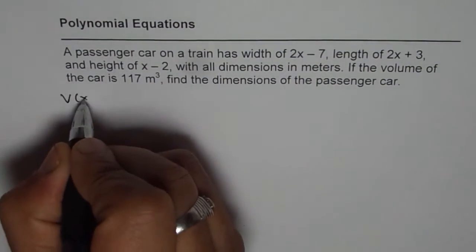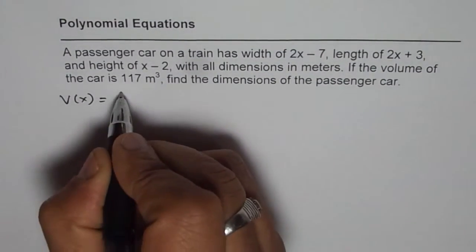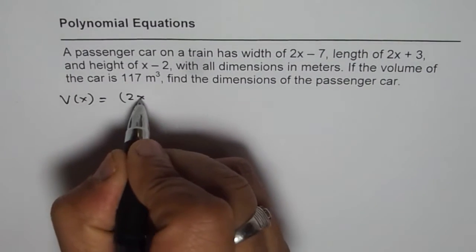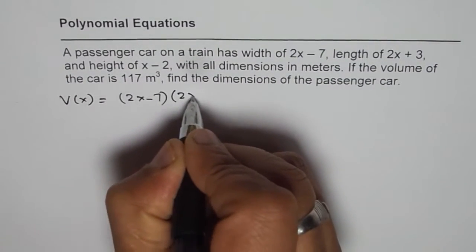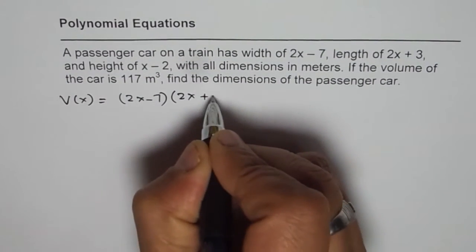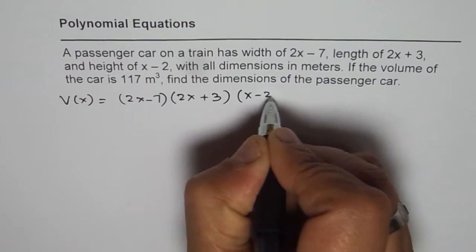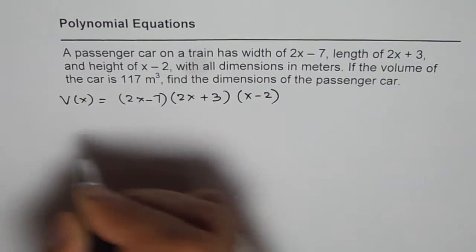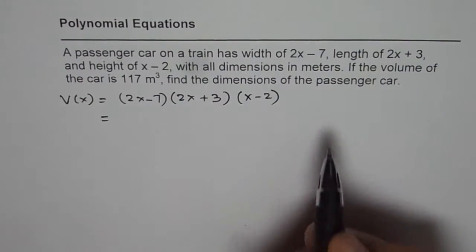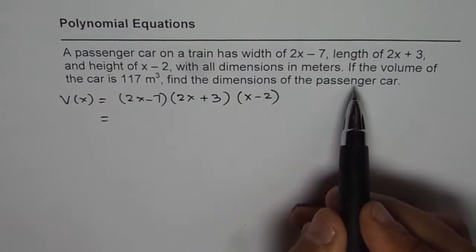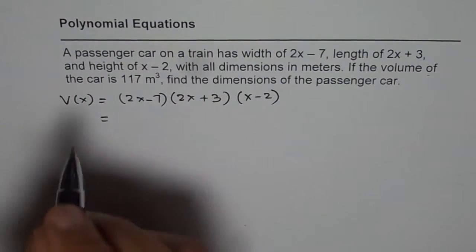The volume in terms of x is the product of all dimensions, that is (2x-7) times (2x+3) times (x-2). So let us expand this and find the value of x so that the volume equals 117.